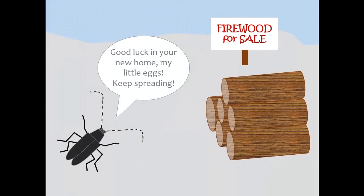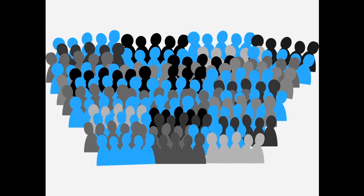Invasive species spread in all of these ways, but typically they get help from humans to move much farther than they would be able to move on their own.